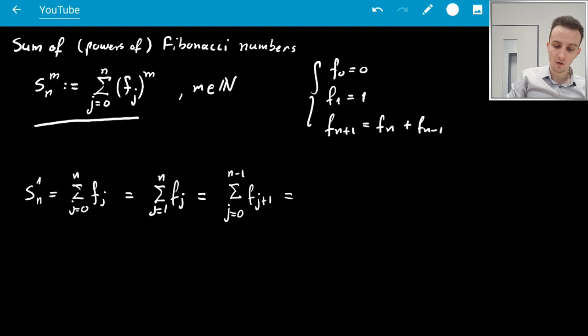And now, I'm going to use this star formula to write F_j+1 as F_j+2 minus F_j.